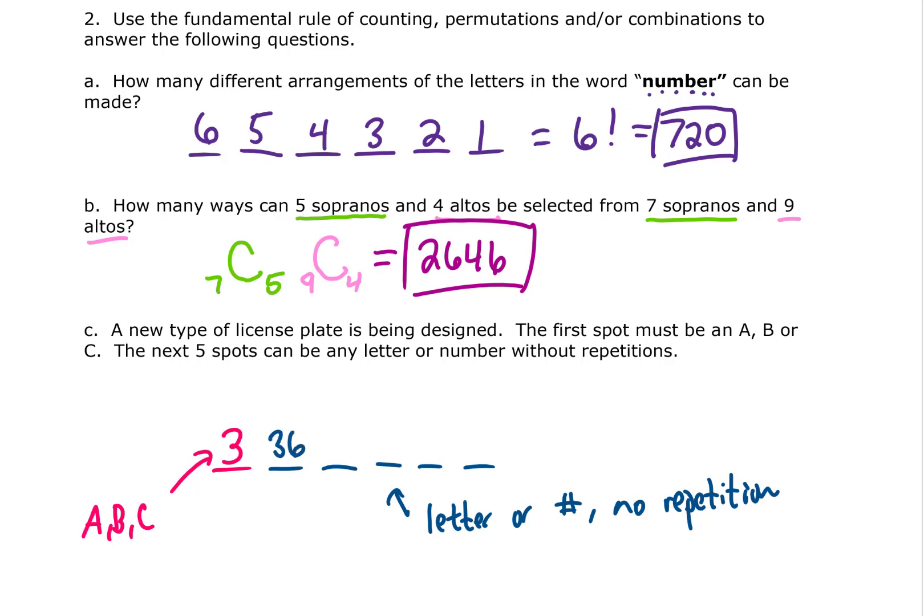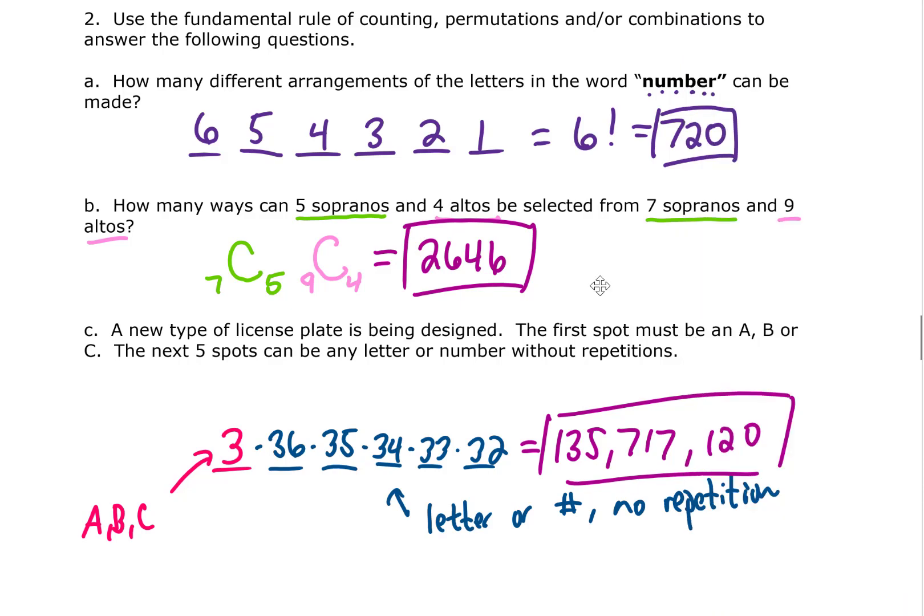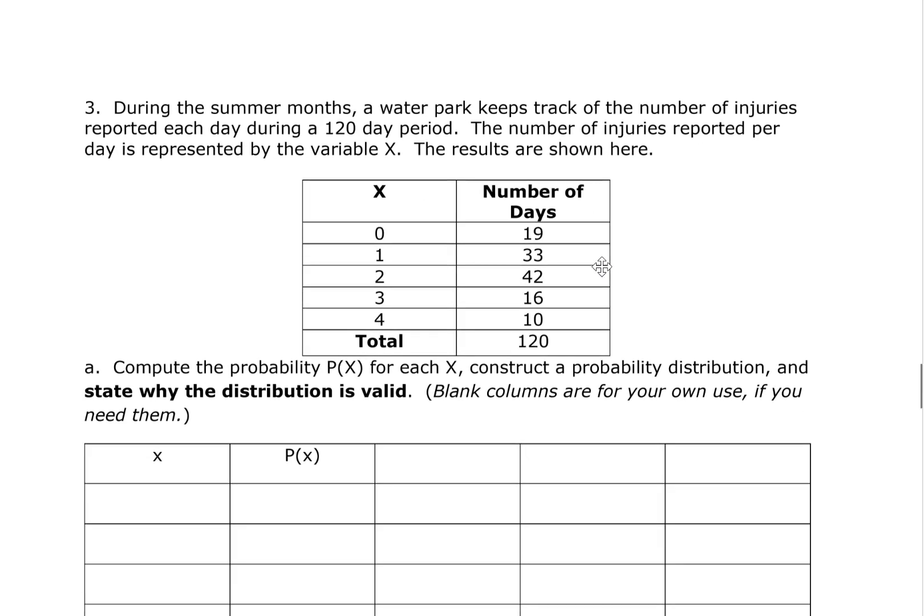However once we make that selection we only have 35 options left for our next spot and so on until we fill all of our spots. We can multiply all those numbers together and my calculator is giving me 136 million options for this license plate. That is a whole lot of license plate options. Of course they have to take out the ones with the dirty words in them.